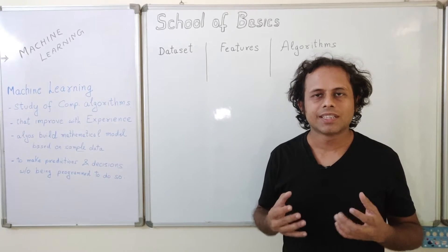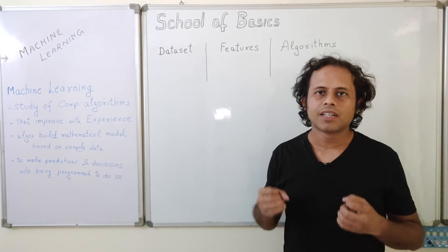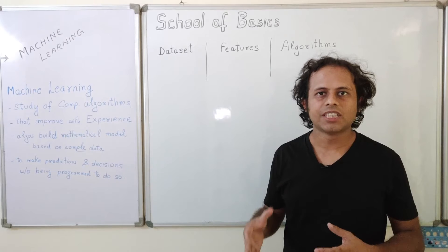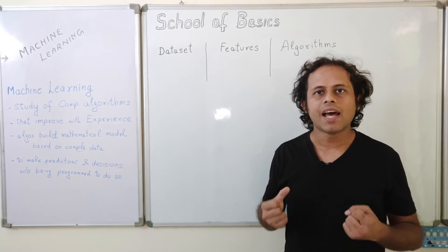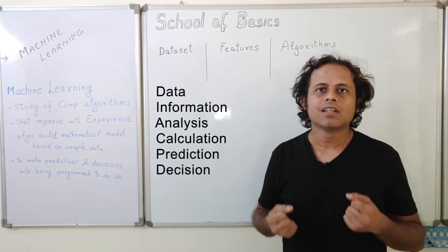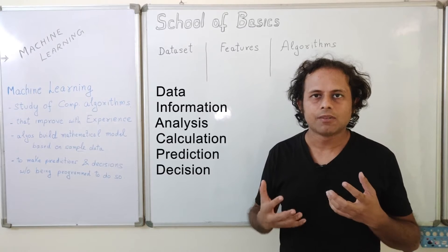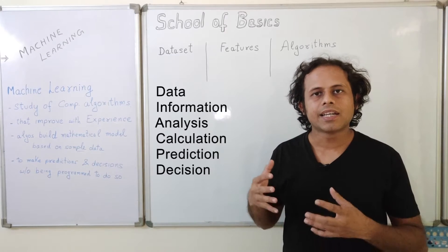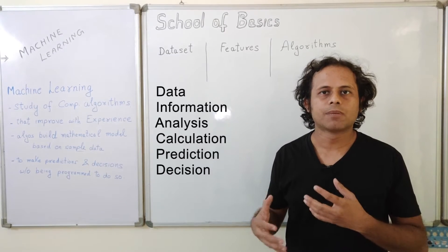Now machine learning works in the same way. We provide data and information to the machine, as much data as possible, and looking at that data and all the information that is available, it can take some decisions or do some predictions.